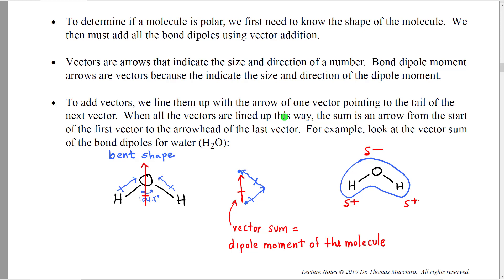Vectors are arrows that indicate the size and direction of a quantity in three-dimensional space. Bond dipole moment arrows are vectors because we draw them a certain size to indicate magnitude and in an exact direction indicating the bond location. To add vectors, you take the vectors from the bond dipoles and move them over in space — place the first vector, then start the second where the first one ends, and continue until you've used all vectors. Then draw one arrow from the very beginning of the first vector to the very end of the last.